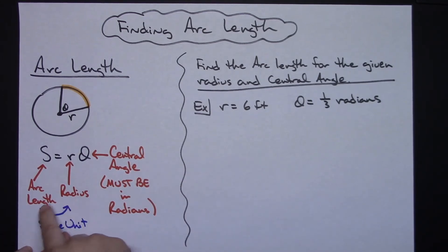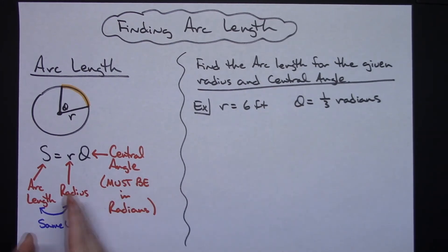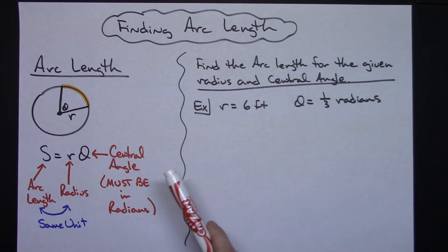The other extra note is your arc length and your radius are going to be in the same unit. So if they tell you that the radius is for example in feet, then your arc length is also going to be in feet. For the first just one quick example, because it's a pretty straightforward formula, find the arc length for the given radius and central angle.